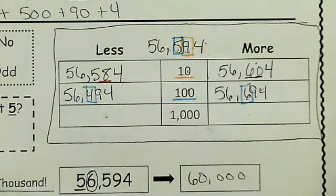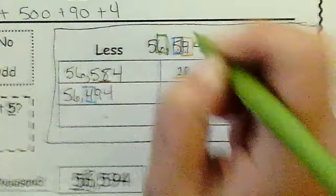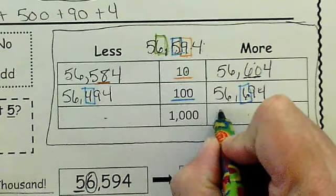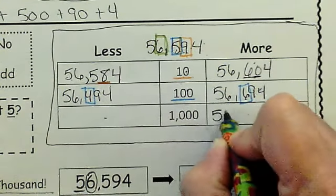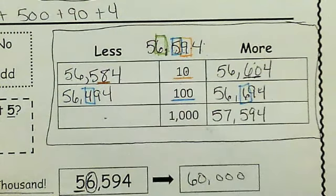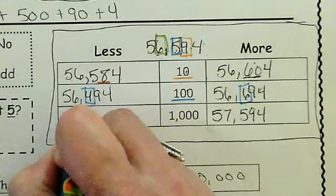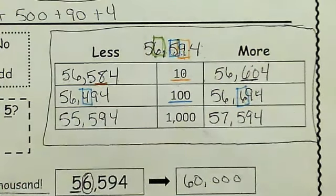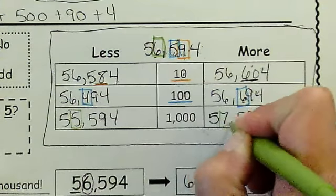Now let's look at our thousands. My thousand this time is a 6, so I need to go up 1,000 and down 1,000. Let's start with up 1,000. What's 1 more than 6,000? 7,000. 7,594. What's 1,000 less than 6,000? It would be 5. So on this one I changed my thousands place numbers.